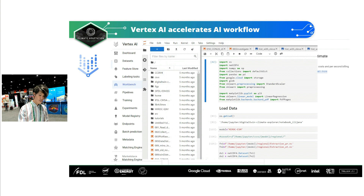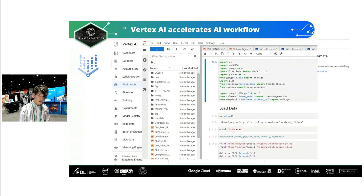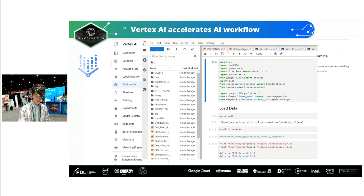After you finish the configuration, the Jupyter app starts, which should be familiar to most users. You can then use the Jupyter environment to train your network on the virtual machine, without the cumbersome setup work that would be needed without the Vertex AI application.